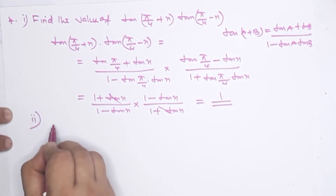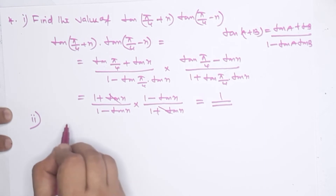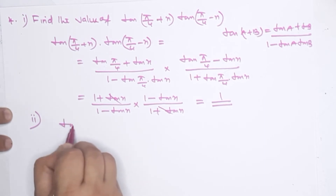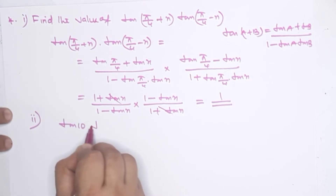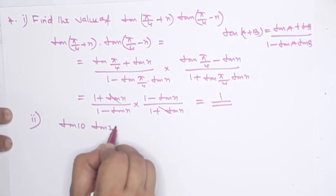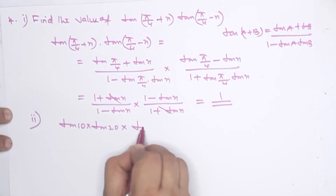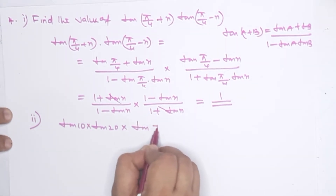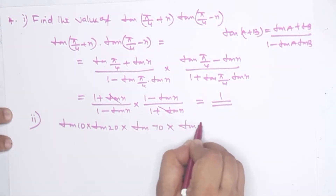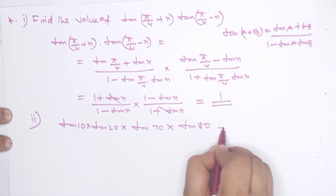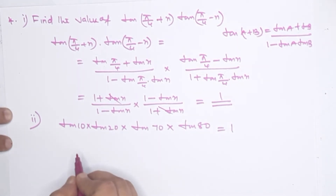Now I will ask: tan10·tan20·tan70·tan80 equals 1. Let's try this.